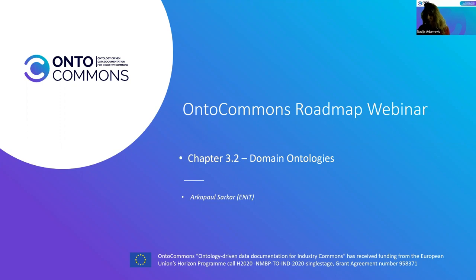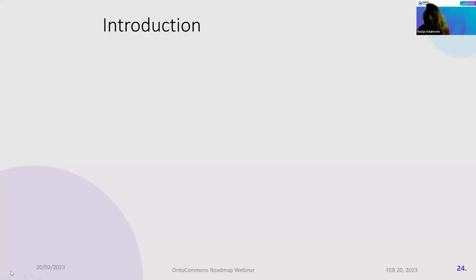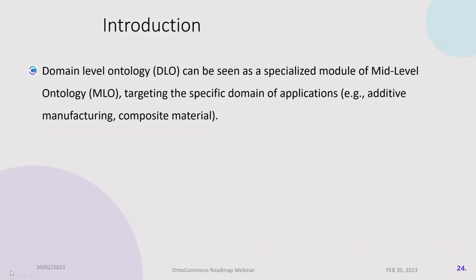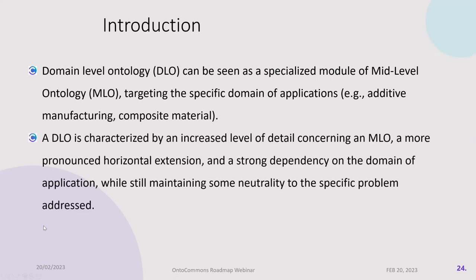The next presentation is on industrial domain ontologies, given by Arco-Paul Sarkar from the ANIT institution in France. This is work package three regarding domain ontologies. Many tasks involved landscape analysis of domain ontologies in manufacturing and materials requirements for pilot cases, and harmonization between these ontologies. Input was gathered from focus group meetings, global workshops, and many stakeholders both internal and external to the project.